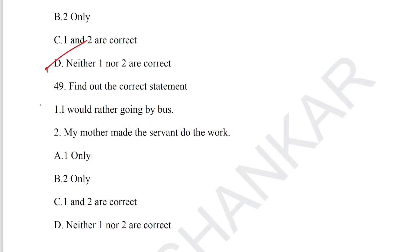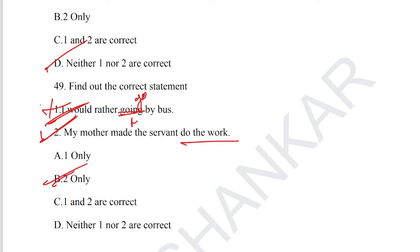Question number 49: find out the correct sentence. Statement 1: 'I would rather going by bus' — incorrect; we should use 'I would rather go by bus.' Statement 2: 'My mother made the servant do the work' — this is correct. Statement 2 only correct. Option B, statement 2 only correct, is the answer for question number 49.